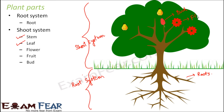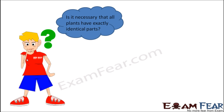Buds, flowers, and fruits are all parts of the shoot system. In the next section of this lesson, we will learn about each of these parts — root, stem, leaf, flower, and fruit — in more detail, and see what function each performs in the plant.